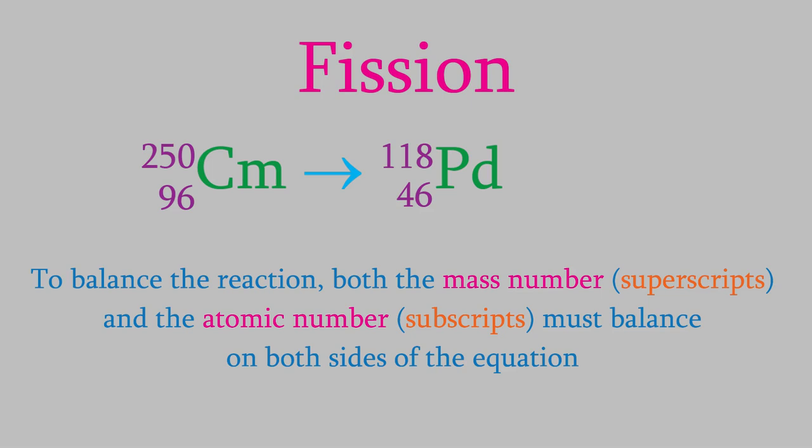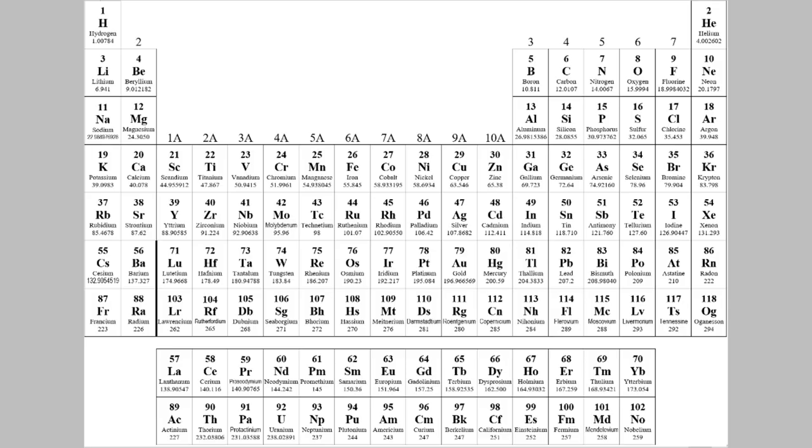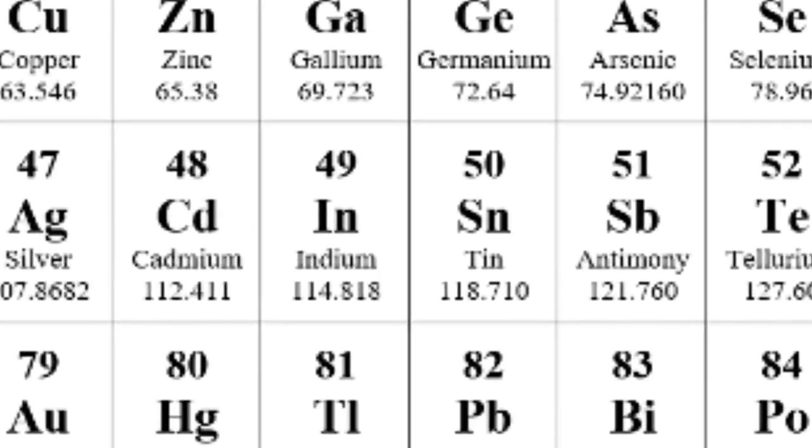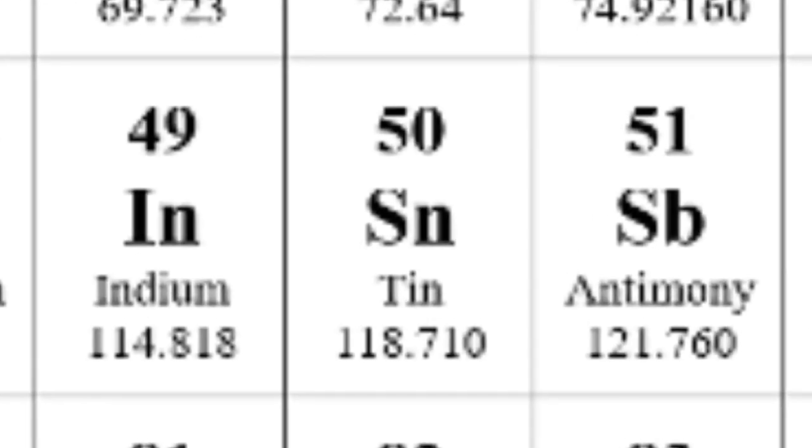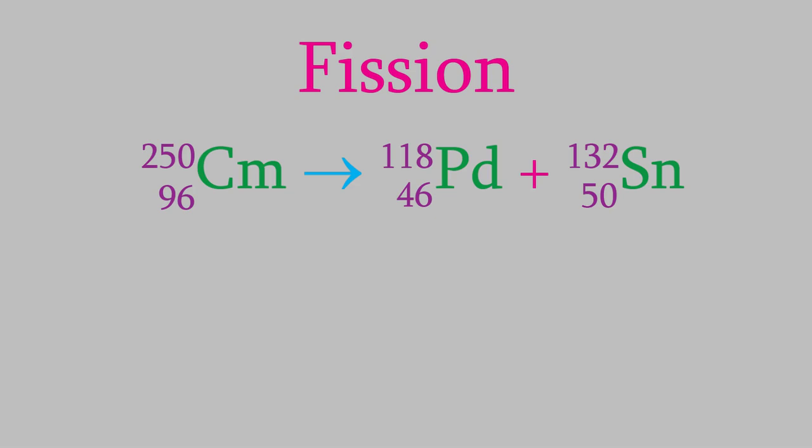In this case, that means that the mass number of this second product must be 132, so that the total is 250 on both sides. Meanwhile, the atomic number must be 50. If we check the periodic table, we find out that the element with atomic number 50 is tin, so the second product is a tin-132 isotope.